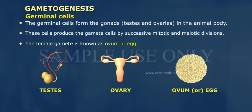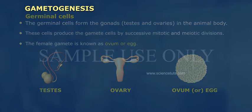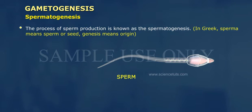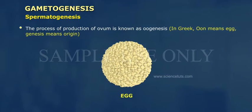The female gamete is known as ovum or egg. The process of sperm production is known as spermatogenesis. In Greek, sperma means sperm or seed, and genesis means origin. The process of production of ovum is known as oogenesis. In Greek, oon means egg and genesis means origin.